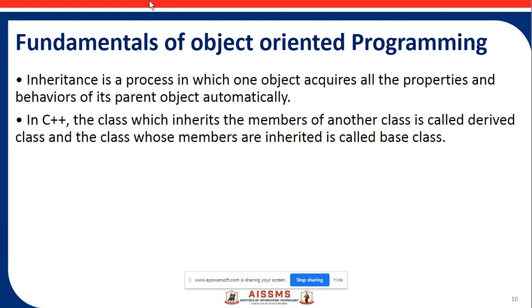The next point is inheritance, which is an important concept in object oriented programming. Inheritance is a process in which one object acquires all the properties and behaviors of its parent object automatically. In C++, the class which inherits the members of another class is called the derived class, and the class whose members are inherited is called the base class.